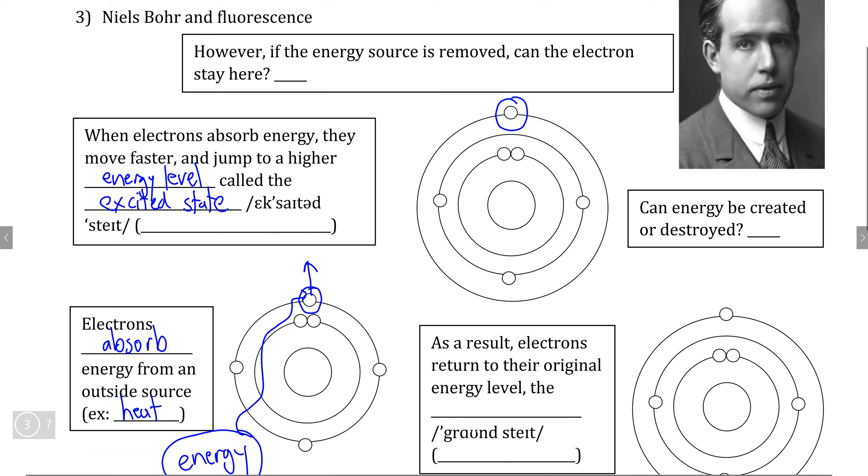The problem is that if the energy source that is supplying this electron with the energy that it needs to get to the excited state is removed, that means that there is no energy input that is keeping this electron in the excited state, which means the electron is not going to be able to stay in the excited state here.